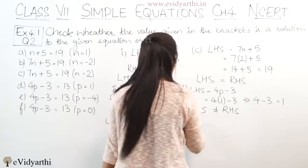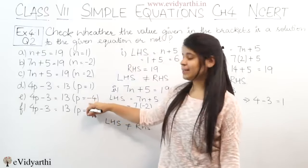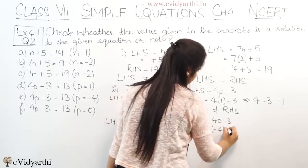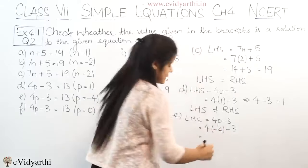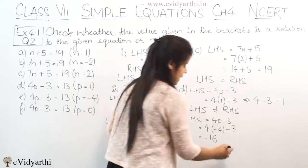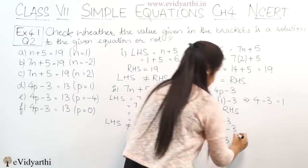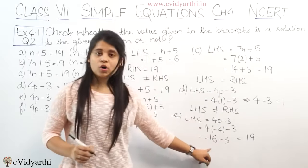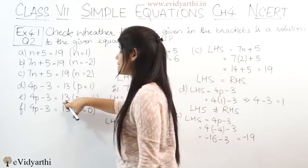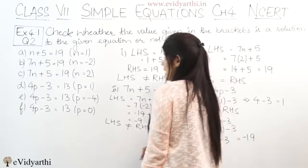In part E, the same left hand side 4p minus 3 is used, but the value of p is minus 4. Putting p = -4: 4 times (-4) minus 3. Since plus times minus gives minus, we get -16 minus 3. Both terms are negative, so minus plus minus gives minus, giving -16 - 3 = -19. The right hand side is 13, so again left hand side is not equal to right hand side.